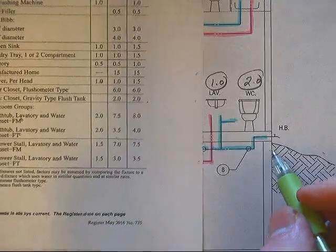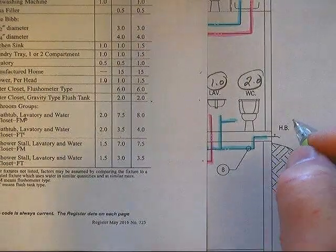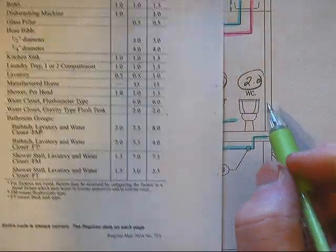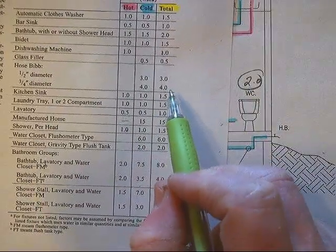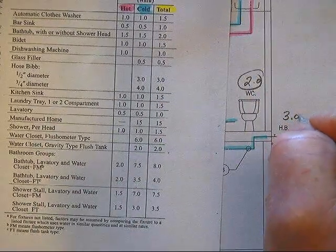Right below that water closet we have a hose bib, and we're going to make that a half inch hose bib. And according to our table, a half inch hose bib has a total load of 3.